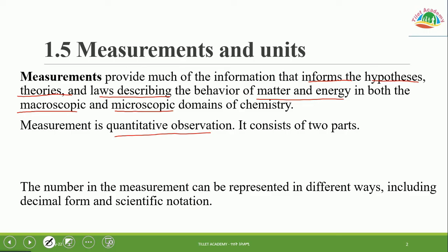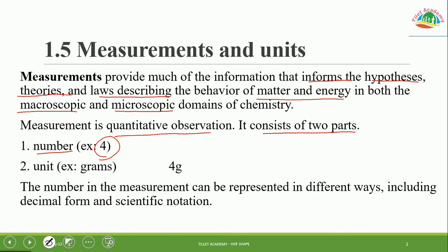Measurement is a quantitative observation. It consists of two parts: a number and a unit. Quantitative observations require both. Examples of units include gram, milligram for mass, and liter or milliliter for volume. Numbers in measurement can be represented in different ways, including decimal form and scientific notation form.